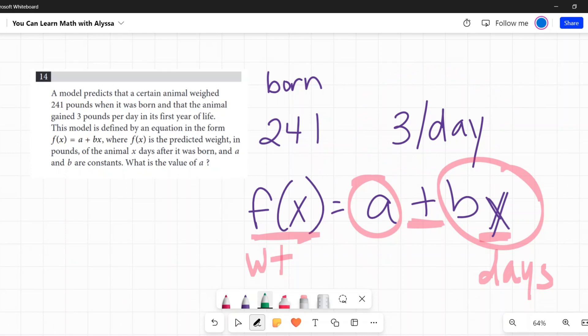So how much did this animal weigh on the first day when it was born? It weighs 241 pounds. What did it weigh the second day? Well, it had that initial 241 pounds and then it gained three more pounds. How much was it the third day? After that it gained another three pounds, now it's up to six. How much did it weigh the day after that? Another three pounds, so now it's up to nine.